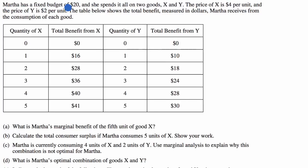We're told Martha has a fixed budget of $20, and she spends it all on two goods, good X and good Y. The price of X is $4 per unit, and the price of Y is $2 per unit. The table below shows the total benefit, measured in dollars, Martha receives from the consumption of each good. We see that here. This is total benefit, not marginal benefit.